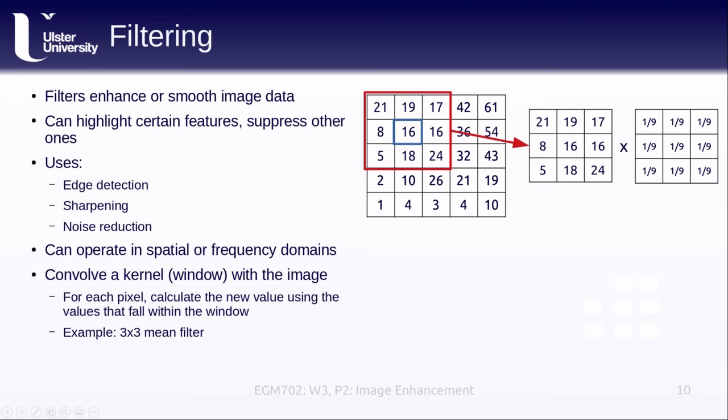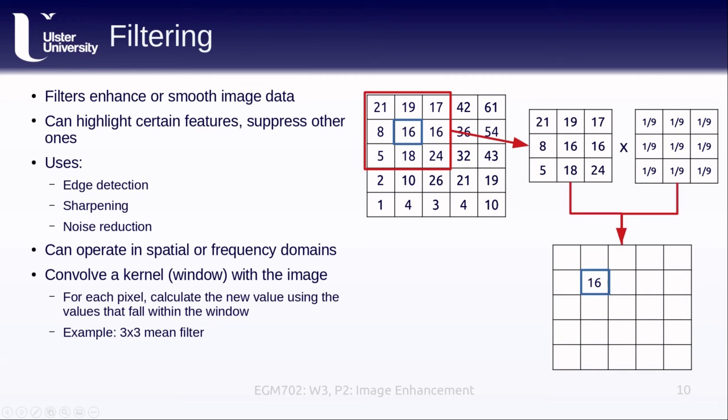So we start with our window centered on the blue pixel here. We multiply each of the values in our window by 1 over 9 and add them together, and we get 16 back. So that goes into the output image here. We can keep doing this to get all of the different values in the new image. Now, you might notice that the edges, where we don't get a full window, aren't filled in. Normally, we need to specify what to do here. You'll need to check the particular software package that you're using to see how it handles these edge cases.